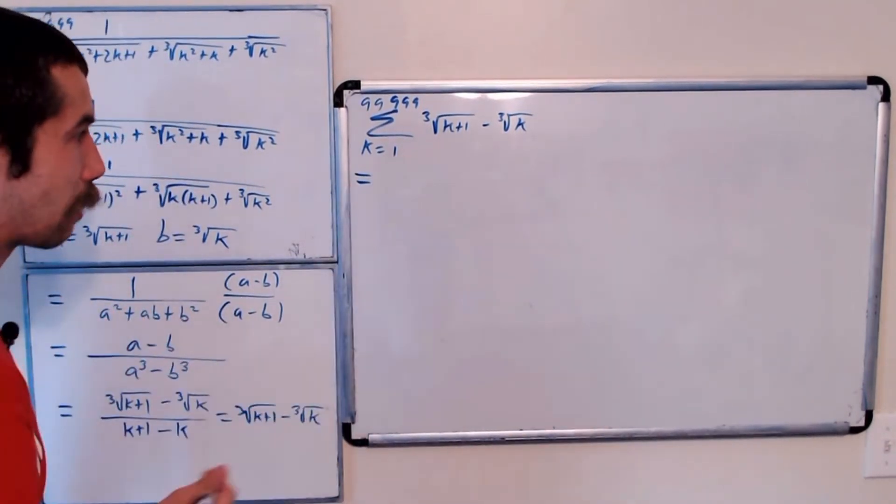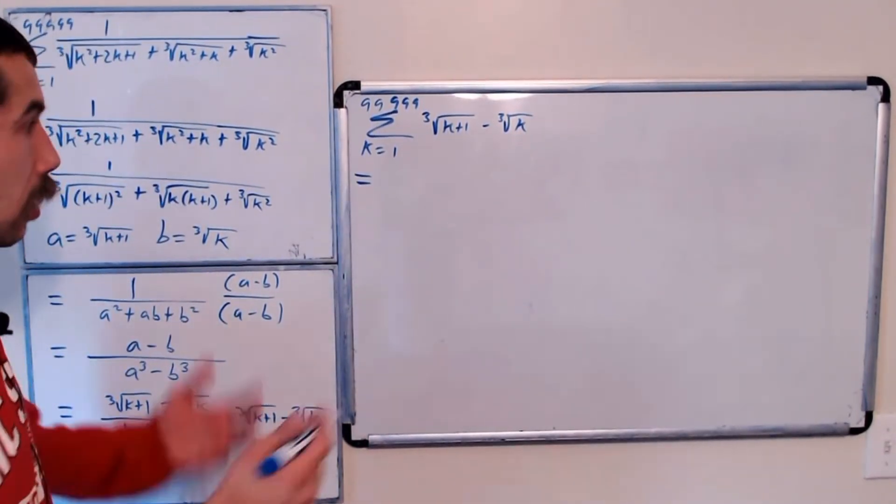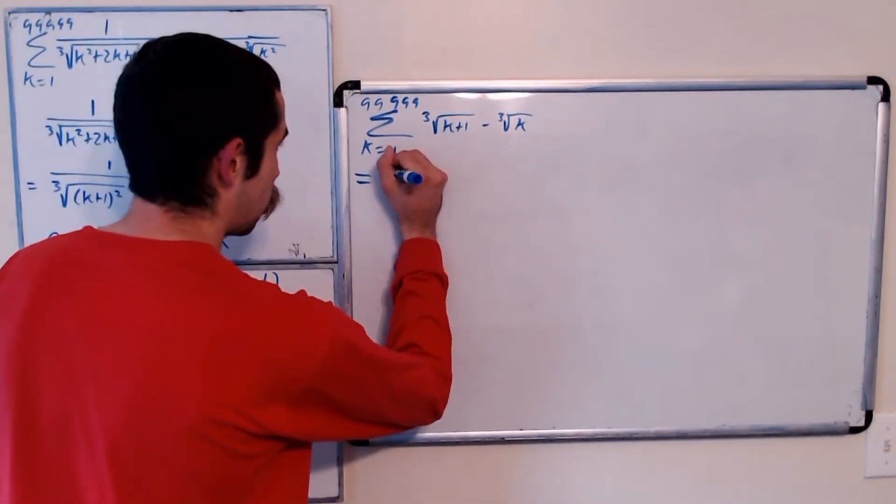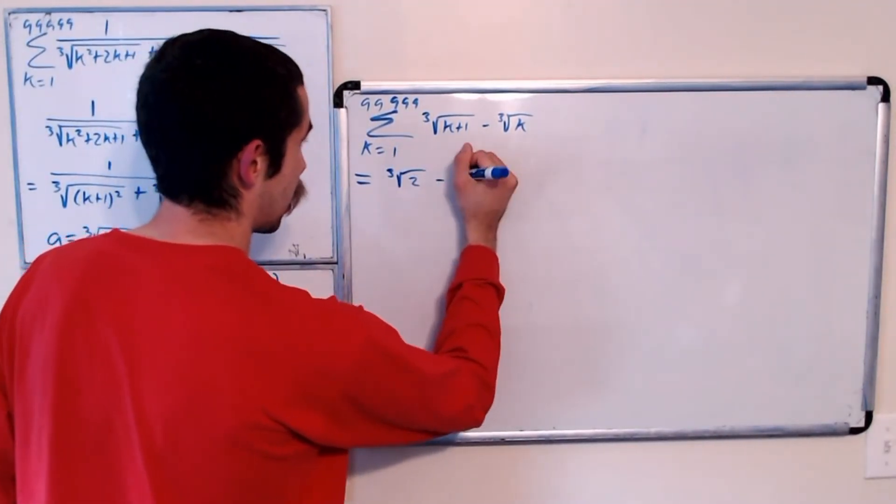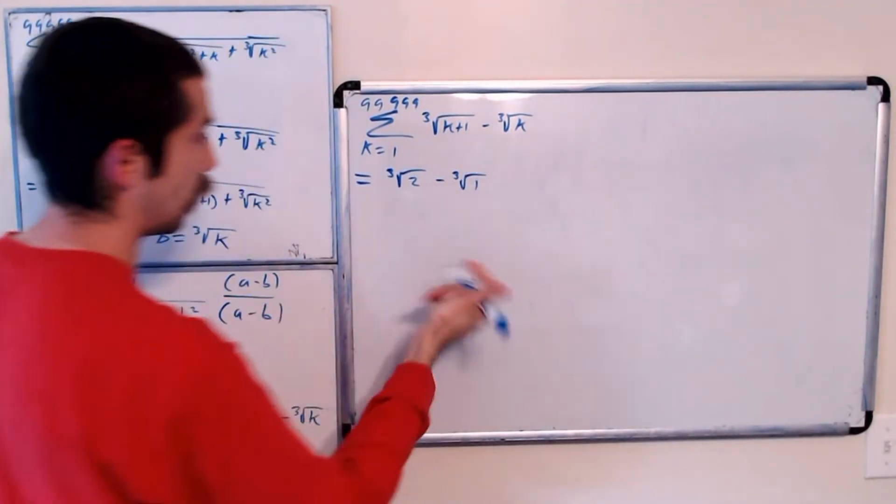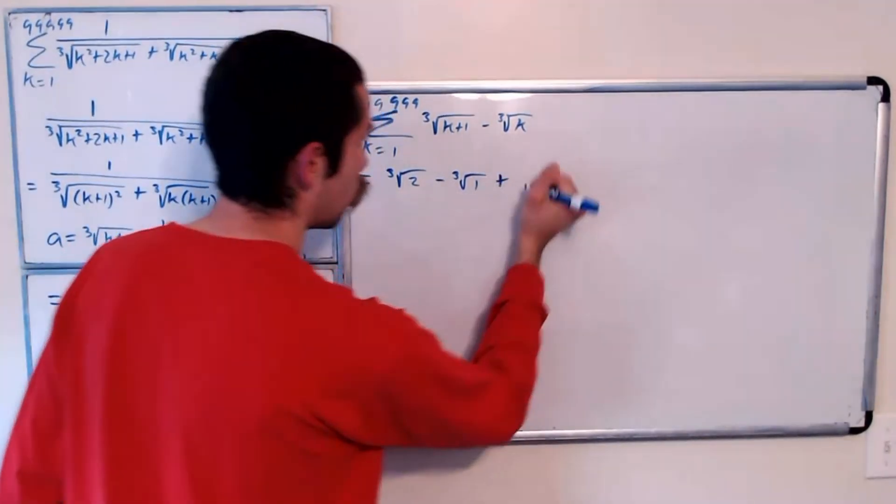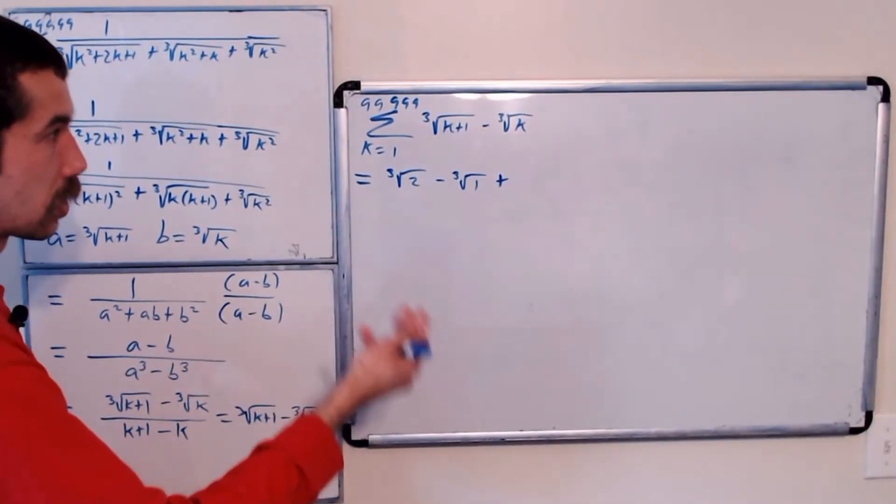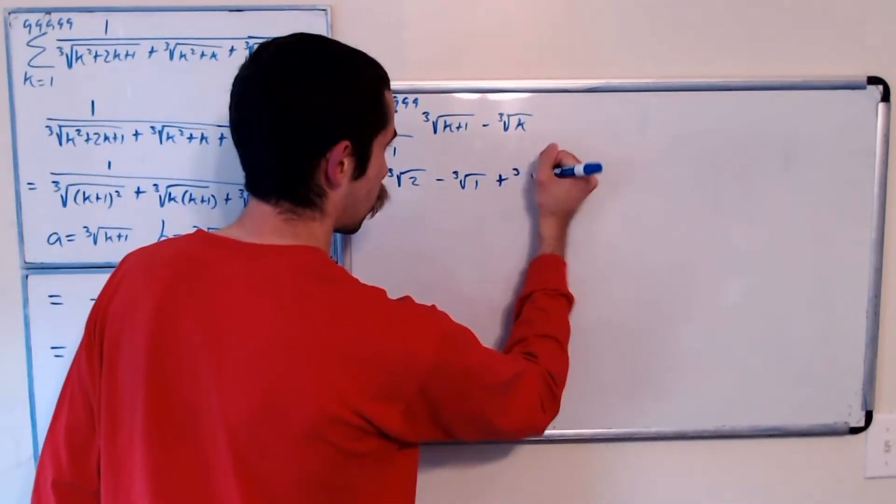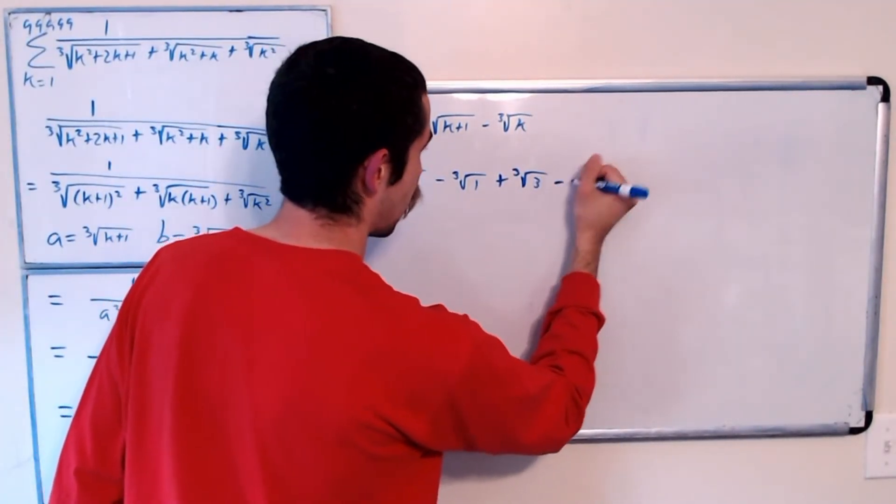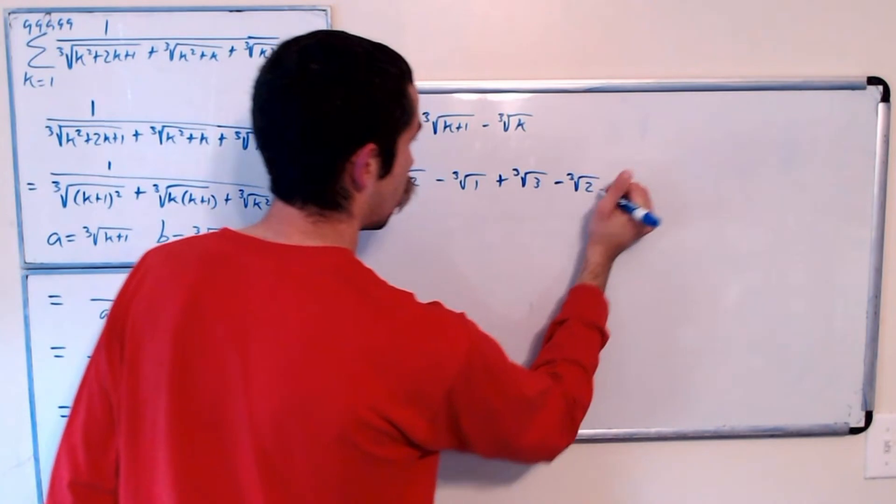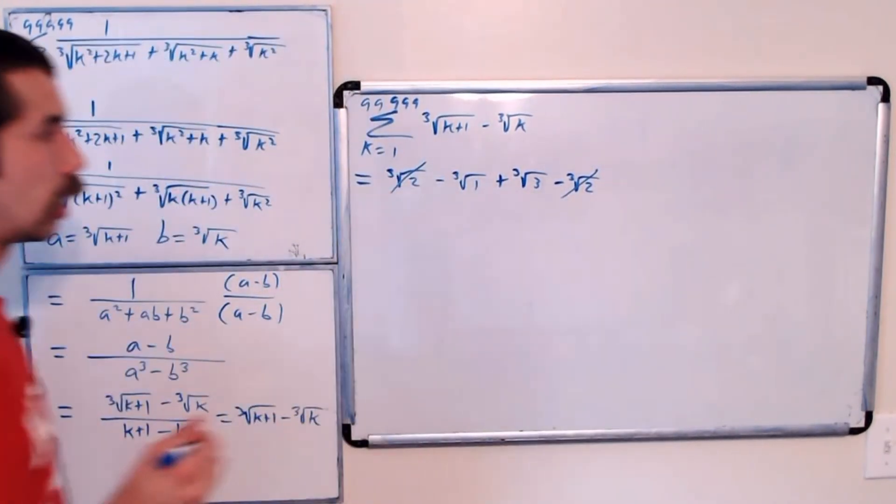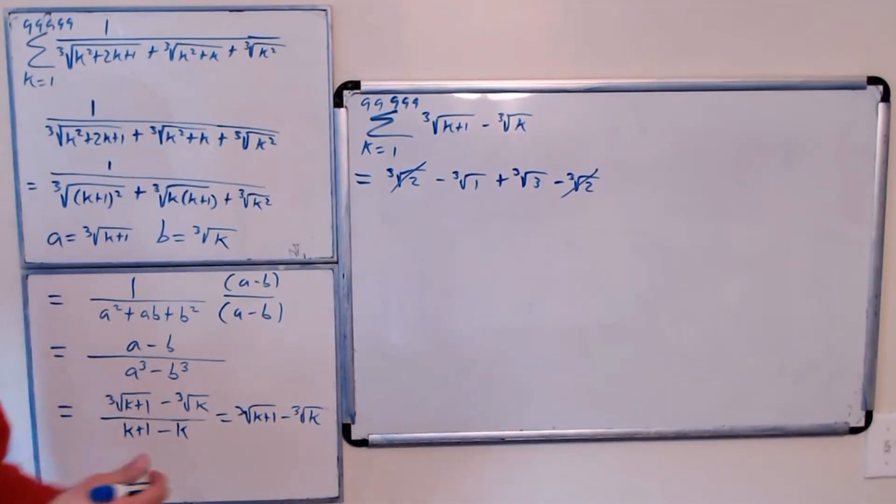So when we plug in k equals 1, what do we get? We get the cubed root of 2 minus the cubed root of 1. So the next term, we plug in k equals 2, we get plus the cubed root of 3 minus the cubed root of 2. So notice the cubed root of 2's will cancel. And we can continue.